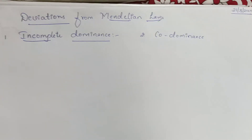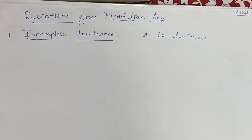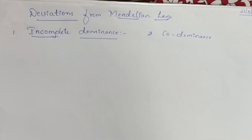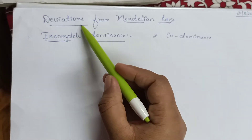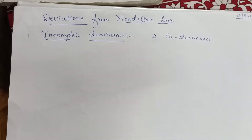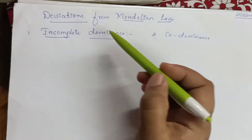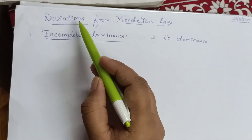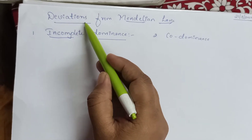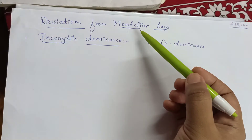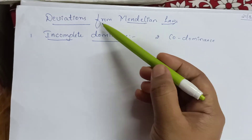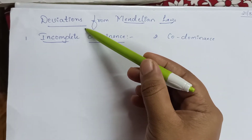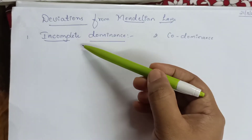Good morning everyone. In the previous video we discussed about monohybrid and dihybrid cross. Now we'll discuss about deviation from Mendelian law. Deviation means changes — there are some crossings which do not follow Mendelian's law. So for such conditions we use the term deviation. Suppose if we do a crossing, we will not get the same result as in monohybrid and dihybrid cross.